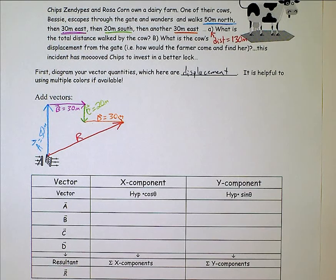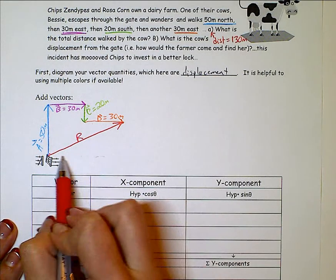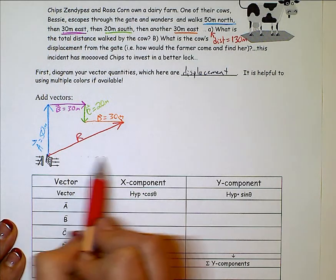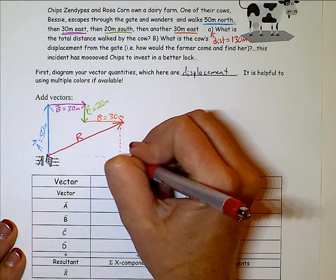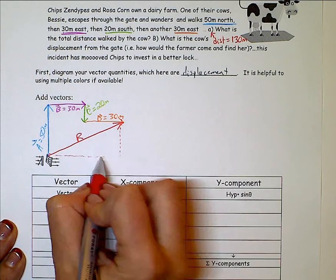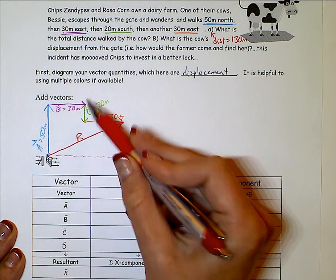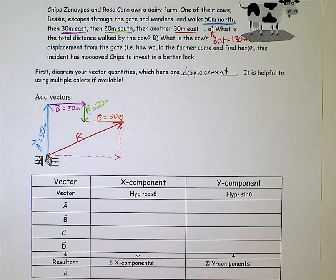And you can kind of see that this resultant is going to be made up of a part that goes this way that's made up of the 30 and then another 30. So this leg here is going to be 60. And then this leg of the triangle is going to be the 50 up and then the 20 down. And so this one's going to end up 30. So this one's a pretty easy example, but I'm going to go through all the steps because other problems can be more difficult.